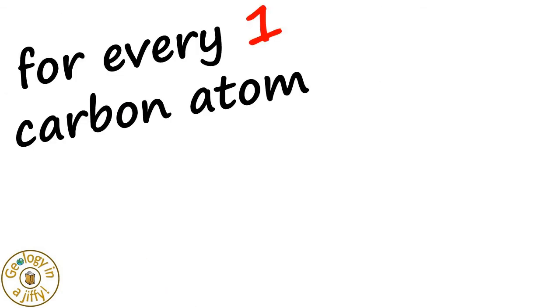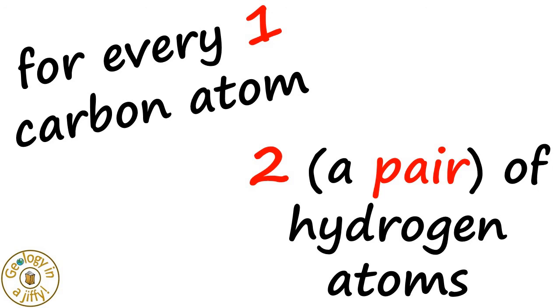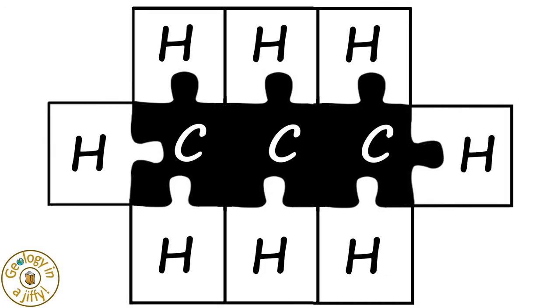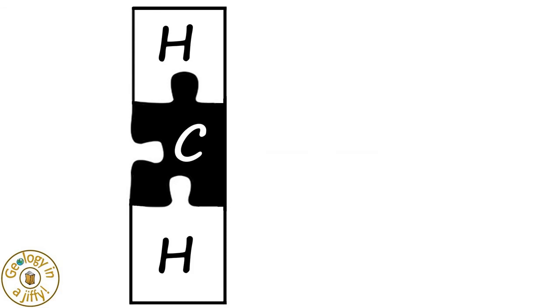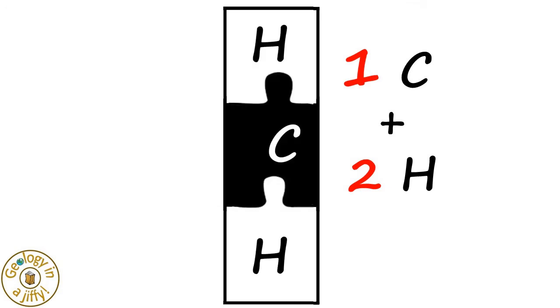We know that for every one carbon atom, there are two, or a pair, of hydrogen atoms. For example, let's look at propane again. If we remove the end hydrogens, we can see that each carbon atom has a hydrogen atom above and below it. So one carbon matches two hydrogens, this for each of the carbon atoms.